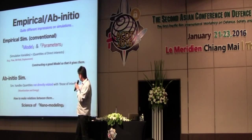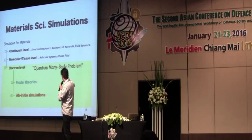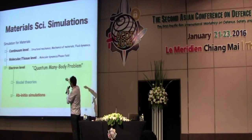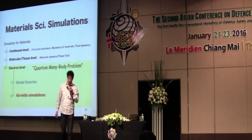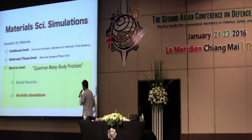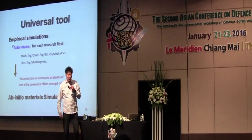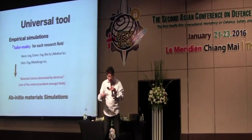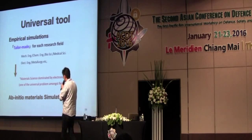I call this the science of nanomodeling. In material simulation, empirical simulation is mainly used for the continuum level and the molecular level, but at the electron level, ab initio simulation is the tool. As I explained, I got my PhD in model theory but later moved to the ab initio framework. Now, why ab initio is becoming increasingly attractive is because of its relation to data science — I will explain this later.